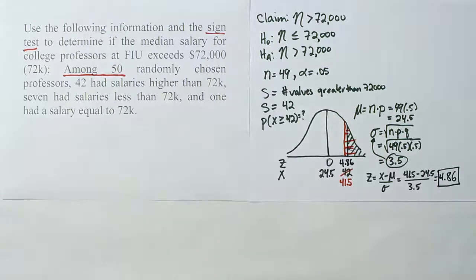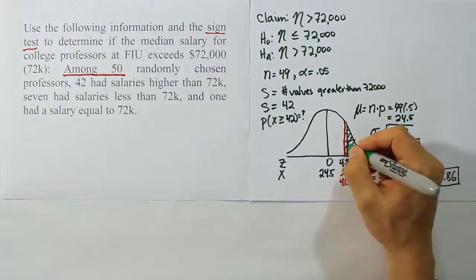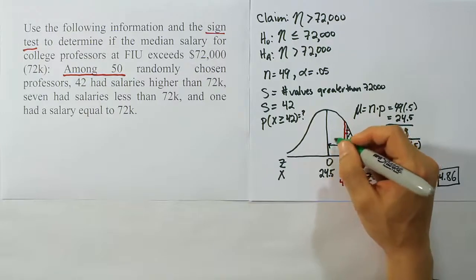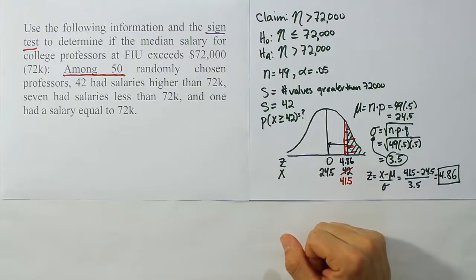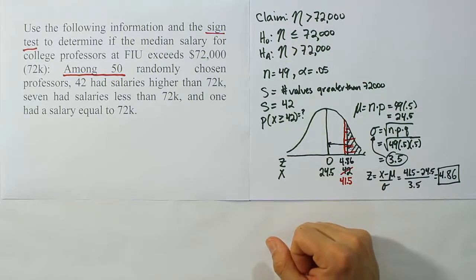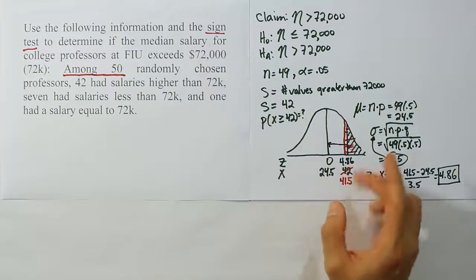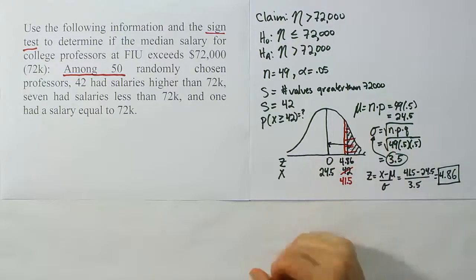Now, normally we would go to our Z chart, look this up and get the area from here to here, and then we would subtract that from 0.5. But 4.86 is off the charts. In other words, that area is off our chart. Our chart usually goes up to 3.09. Sometimes they go to 3.99. They don't ever go to 4.86 to my knowledge. I've never seen a Z chart that goes that far. So that means basically this area here is approximately zero.